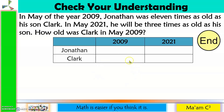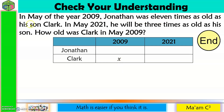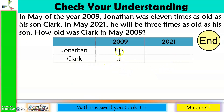Let us answer by creating a table for 2009 and 2021. In May 2009, Jonathan was 11 times as old as his son Clark. Clark's age in 2009 is unknown, so let Clark's age in 2009 be X, and Jonathan's age be 11X. From 2009 to 2021 is 12 years, so Clark's age in 2021 is X plus 12.